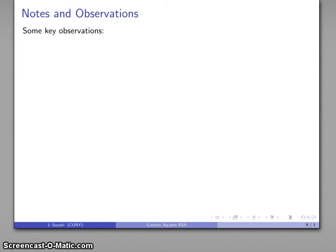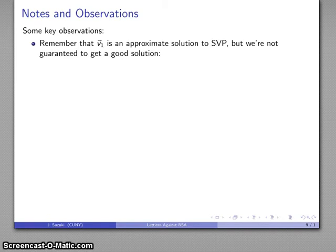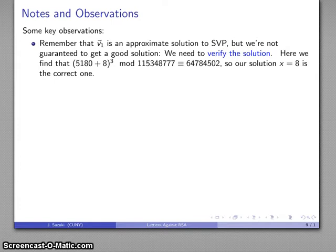Some quick notes about this. Remember that while this v1 is an approximate solution to the shortest vector problem, it's not guaranteed to be a good solution, which means we have to verify our actual solution. What that translates to in this case is that we find that if x is 8, then (5180 + 8)^3 mod 115348777 equals 66784502, so our solution x equals 8 is the correct one.